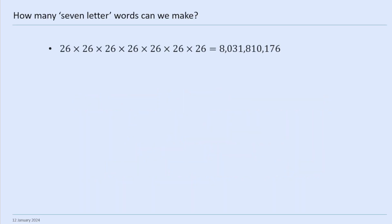First questions. Permutations and combinations is basically about how many ways you can choose things, how many ways you can put things in order — it's that sort of thing. So, the first question is: how many seven-letter words can we make from 26 letters? We're including all words here, not just words in the English or French language, just any sequence of letters, any seven-letter sequence.